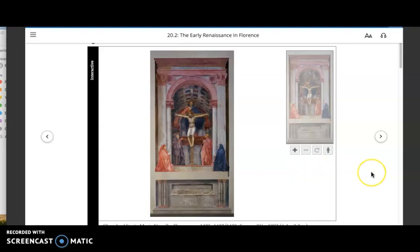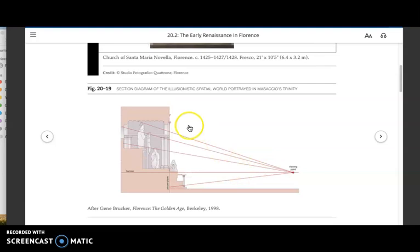This diagram helps you understand that in terms of the one point, you have the vanishing point in the painting, but you also have a viewing point. This is a system of perspective that imagines a viewer standing in a correct or preferred optimal viewing point to experience maximum depth.